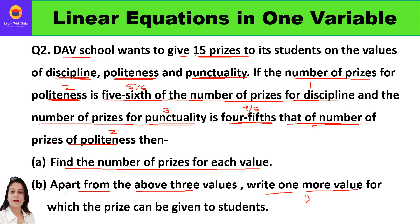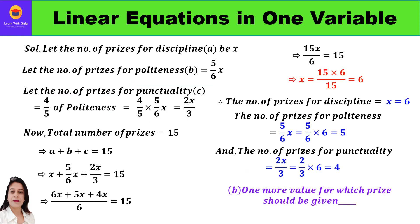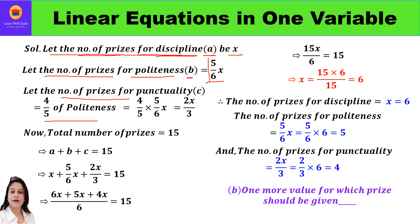Since prizes for politeness depend on prizes for discipline, let the number of prizes for discipline be x. Number of prizes for politeness = 5x/6. Number of prizes for punctuality = 4/5 of politeness = 4/5 × 5x/6 = 2x/3.